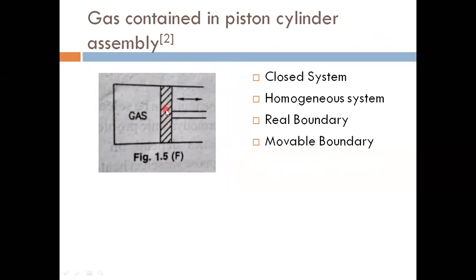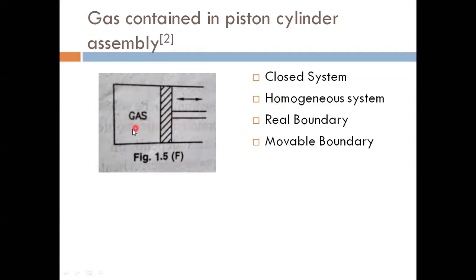Example: gas contained in a piston-cylinder assembly. The piston moves from TDC to BDC and the gas is compressed, so its pressure changes. This is a closed system because no mass leaves the gas. It is a homogeneous system, though more precisely heterogeneous because the pressure differs across the cylinder — high pressure on one side and low on the other. The boundary is real and movable since the piston moves.